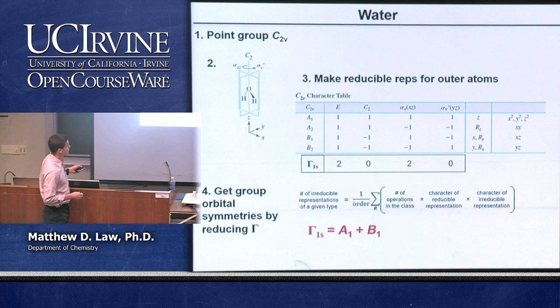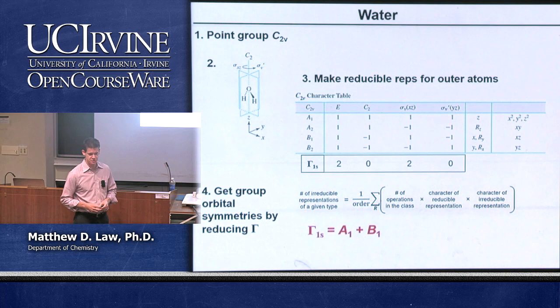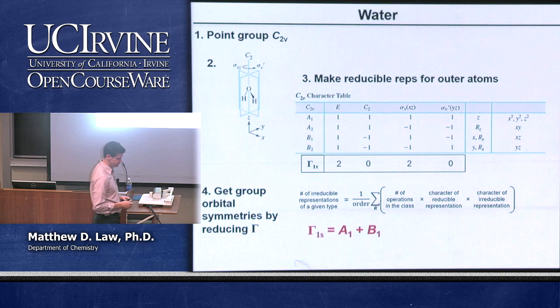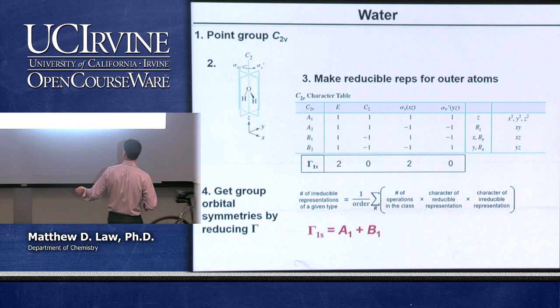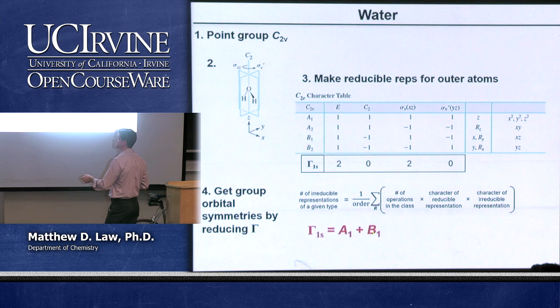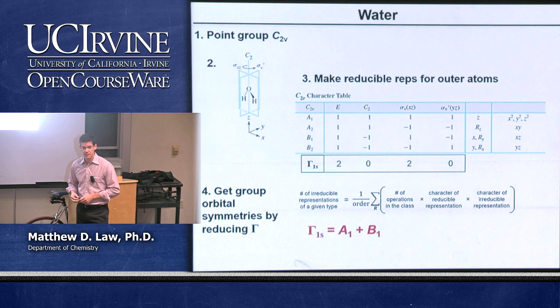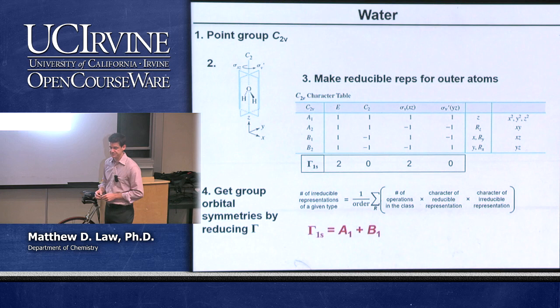To get the group orbitals, we build a reducible representation for the two 1s orbitals. That reducible representation is shown for the four symmetry operation classes. We can reduce it using the normal equation, and we find the reducible representation for the 1s orbitals equals a1 plus b1 — those are the two irreducible representations. So we expect the two group orbitals built from the 1s orbitals to have a1 and b1 symmetry.